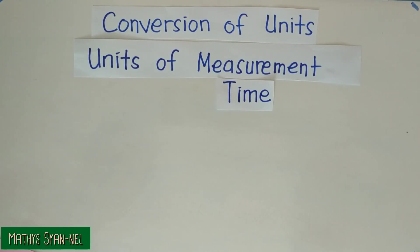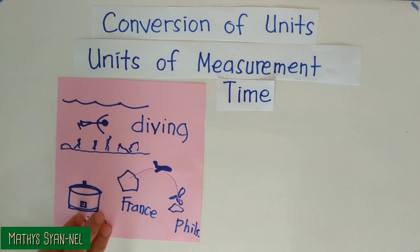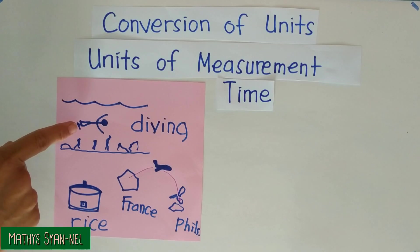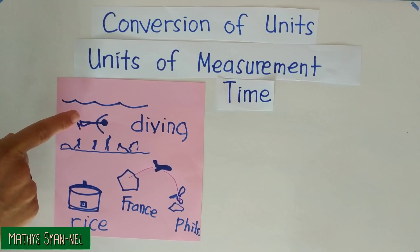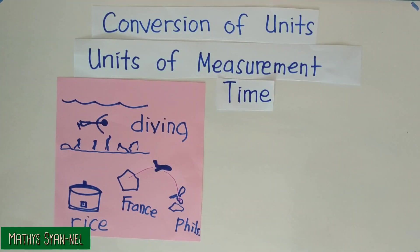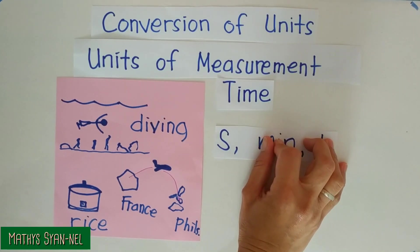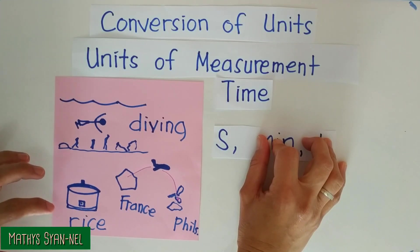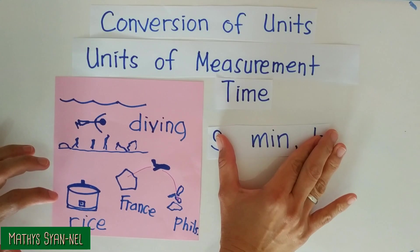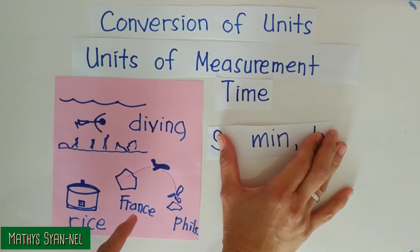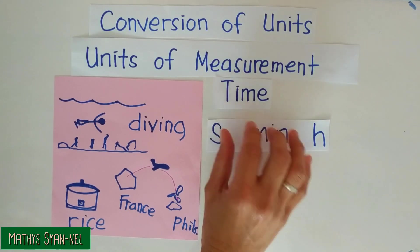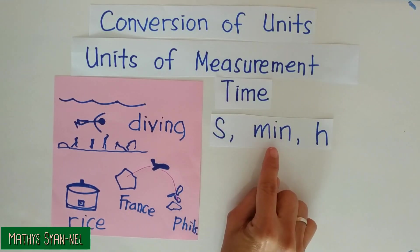Now, let's focus on time. The units that we use to measure time — look at the illustration. We have somebody diving underwater without any oxygen. How long can a person dive underwater without an oxygen tank? Usually, it takes only seconds, so the unit of measurement is second. And how long does it take for rice to cook? Usually, it takes only minutes. And how long does it take to fly from France to Philippines? That takes hours. So the different units for time are second, minute, and hour.